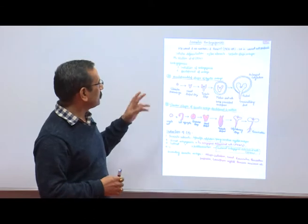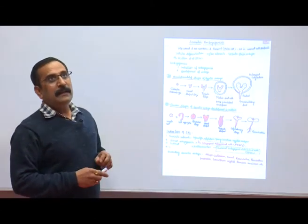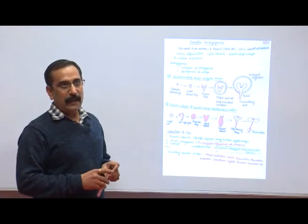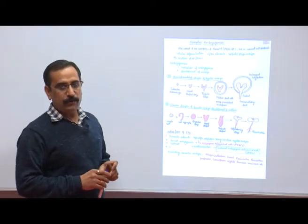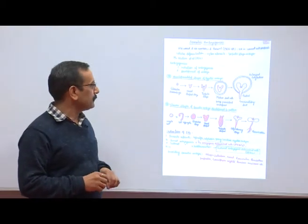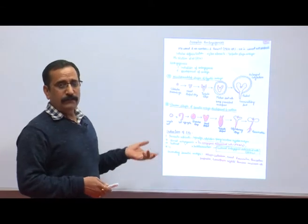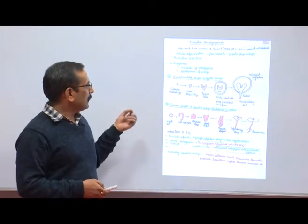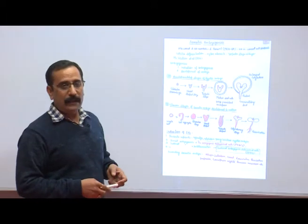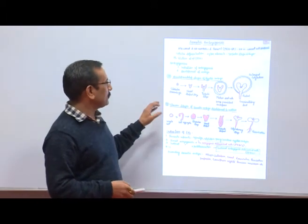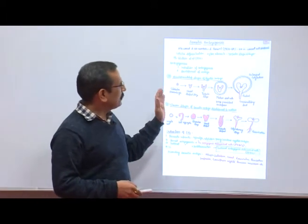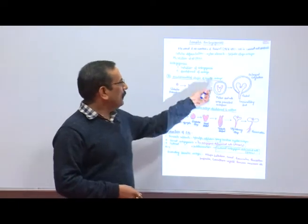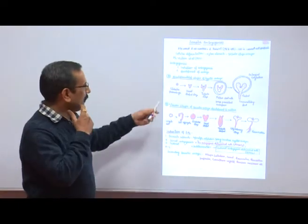In somatic embryogenesis, embryogenesis is of two types: zygotic embryogenesis and non-zygotic embryogenesis. Zygotic embryogenesis involves the fusion of two gametic cells — male and female — and develops the zygote. The zygote cells undergo further differentiation and development to develop seeds.